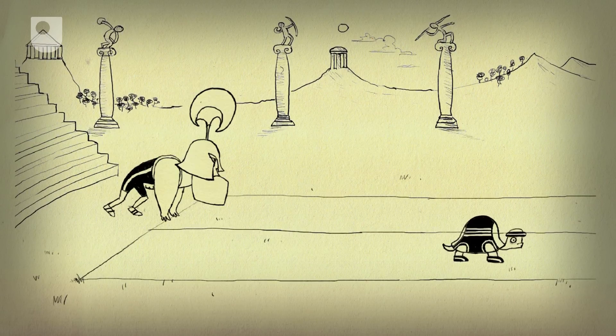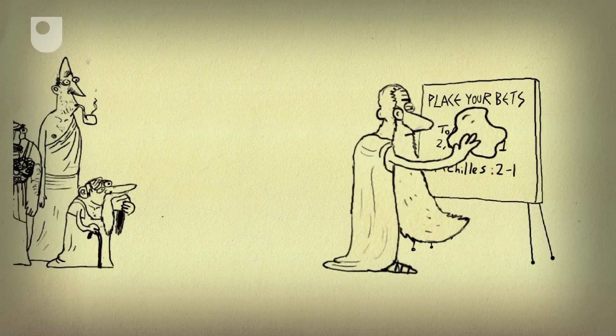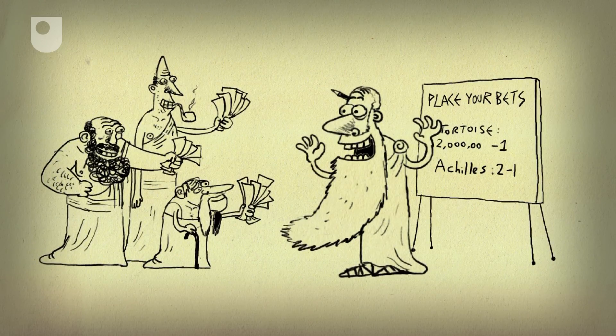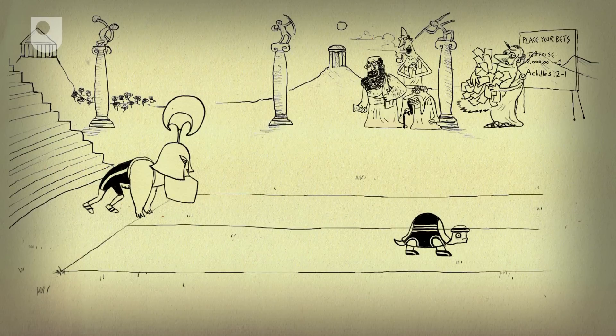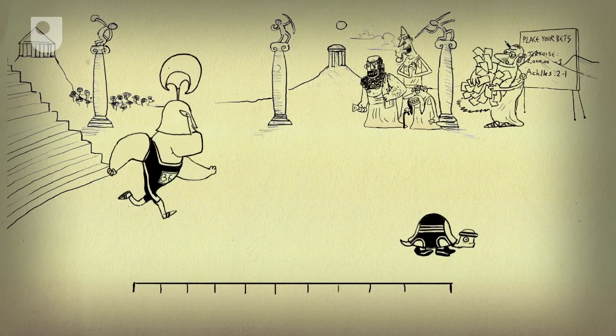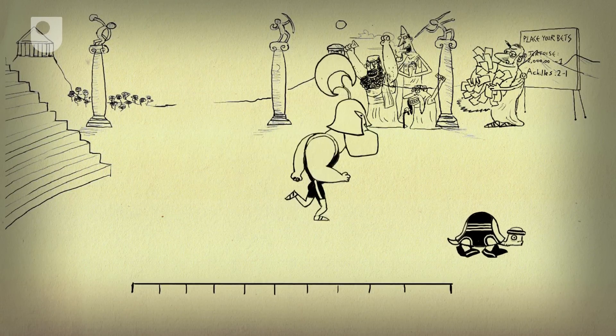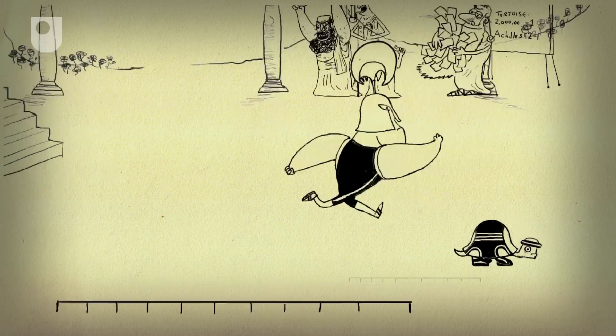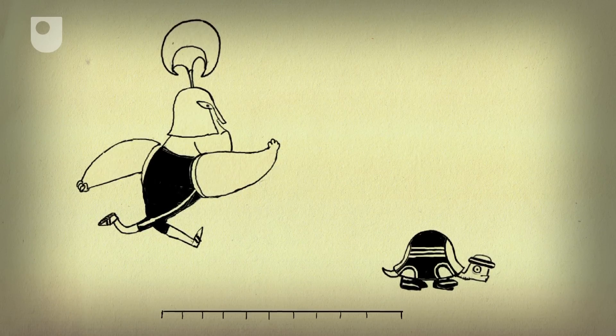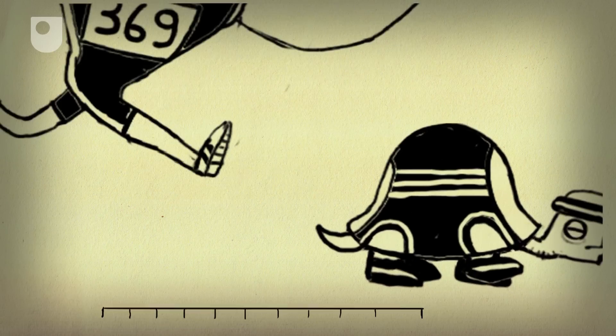First, the tortoise is given a slight head start. Anyone fancying a flutter would still rush to put their money on Achilles, but Zeno pointed out that, to overtake him, Achilles would first have to cover the distance to the point where the tortoise began. In that time, the tortoise would have moved, so Achilles would have to cover that distance, giving the tortoise time to amble forwards a bit more.